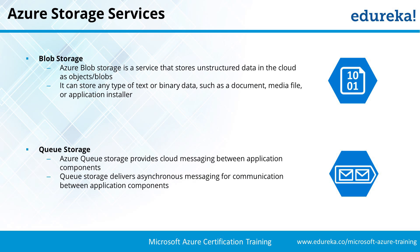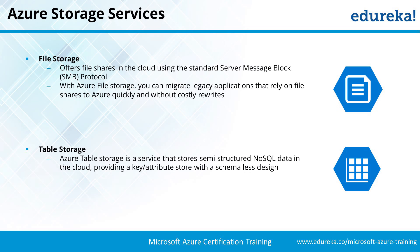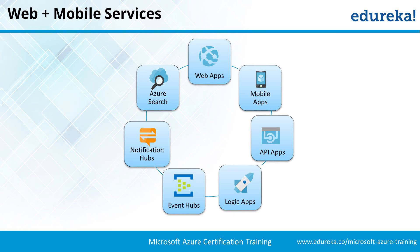Azure Blob storage is a service that stores unstructured data in the cloud as objects — this is your raw storage. Queue storage stores queues for messaging systems on the cloud. File storage stores files and is SMB-based — the new Azure portal supports SMB 3.0. Table storage is for saving unstructured data without a fixed schema, making it different from structured relational data.